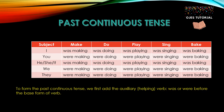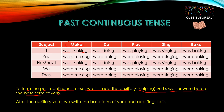Now, let's see how to form the past continuous tense. To form the past continuous tense, we first add the auxiliary or helping verb was or were before the base form of the verb. For example, the base form of the verb is make, so before make we add was or were. After that, we add ing to the verb. So the base form of the verb is written after the auxiliary verb, and then ing is added to it. For example, the base form is sing — we write sing and add ing, so it becomes was singing.